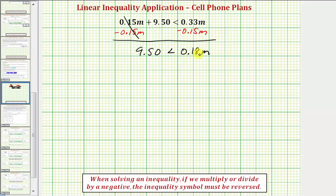This means 0.18 times M. So to undo this multiplication and solve for M, we divide both sides by 0.18. Notice here we're dividing by a positive, so we do not reverse the inequality symbol.